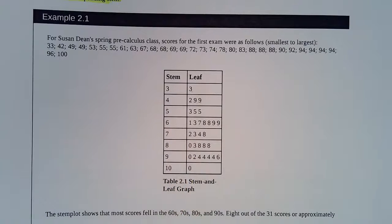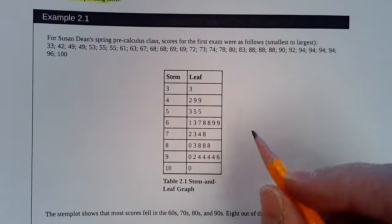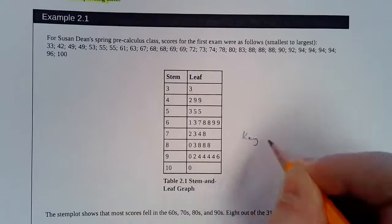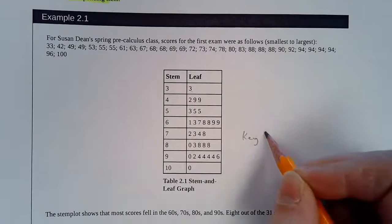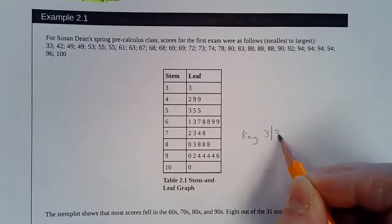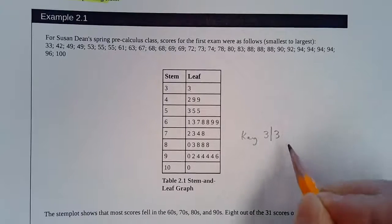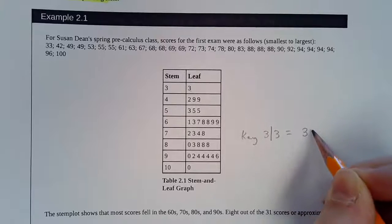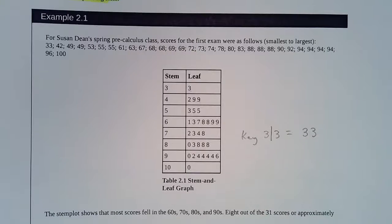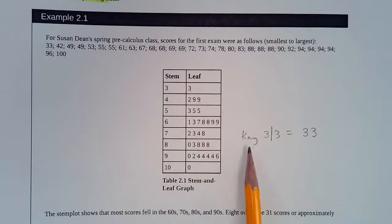And in our textbook, they don't do a great job of this, but we really should have a key saying what these numbers mean. Like 3 for our stem and then 3 following it is the number 33, because it could be 33 million. It could be 3.3. So we really should have a key with our stem and leaf plot explaining what our stem is and what the leaves mean.